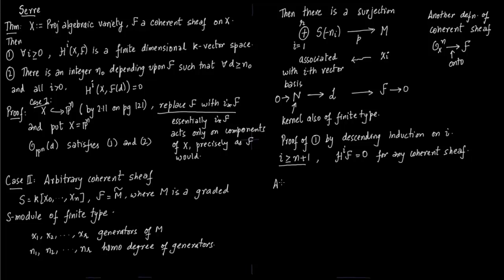We have this exact sequence of sheaves and form the long exact sequence of it. Assume it is true for i+1 that the result is true for i+1. We are proving part 1 of the theorem: that H^i(X,F) is a finite dimensional vector space. Now I'm writing the long exact sequence associated with the short exact sequence of sheaves.